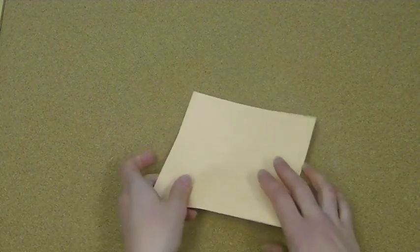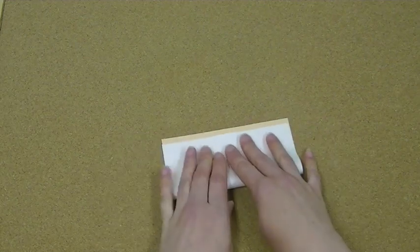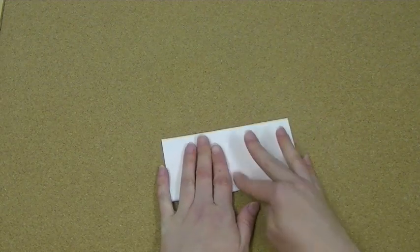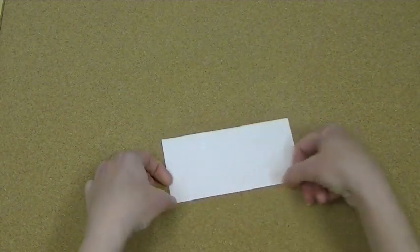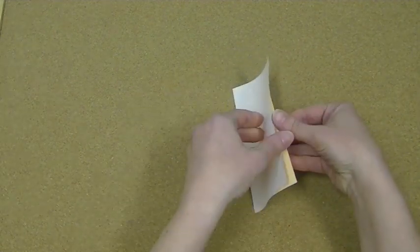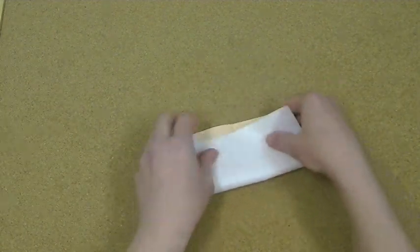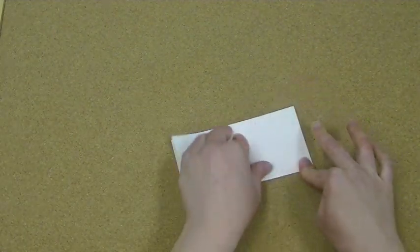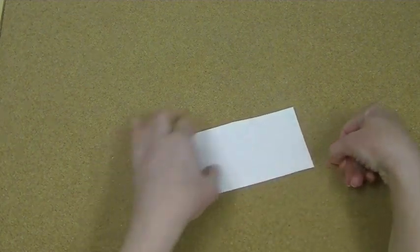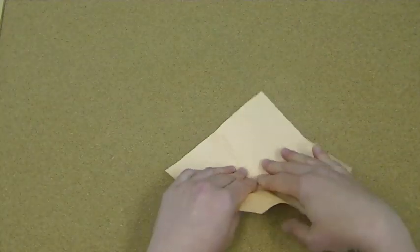So for this origami you just need one piece of origami paper. What we want to do is start off by putting some creases in our paper, put in our horizontal and vertical creases, and also our diagonal creases.